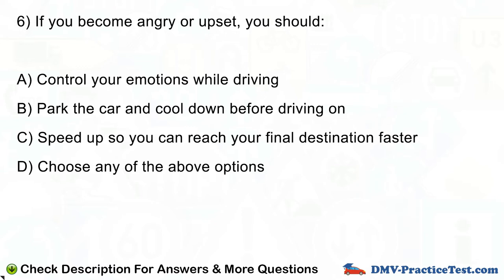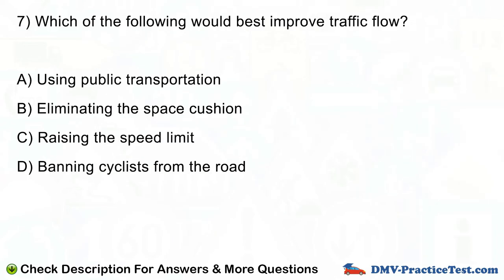Question number 7. Which of the following would best improve traffic flow? A. Using public transportation. B. Eliminating the space cushion. C. Raising the speed limit. D. Banning cyclists from the road.